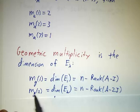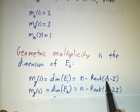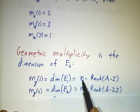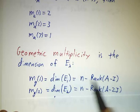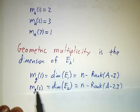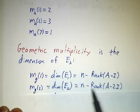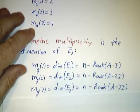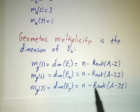That's the number of free variables. You have this many pivots, this many total variables, so the difference is the number of free variables. Likewise, m_g(2) is n minus the rank of A - 2I. And m_g(7) is going to be n minus the rank of A - 7I.